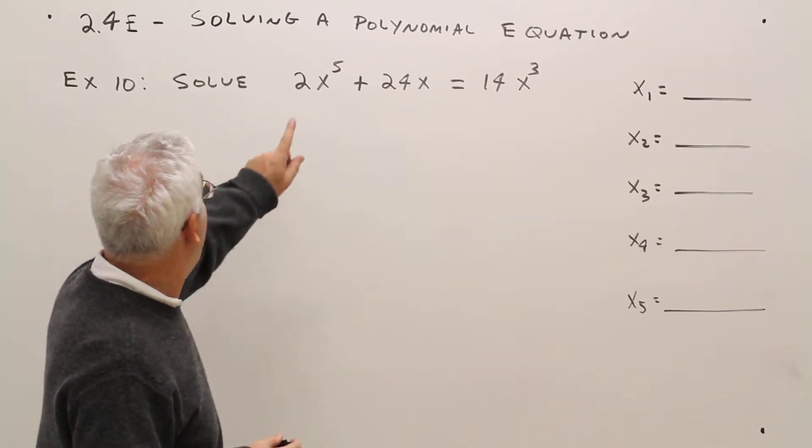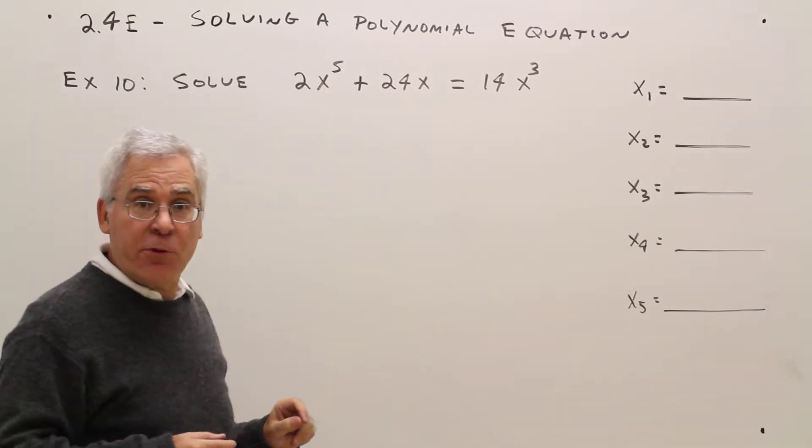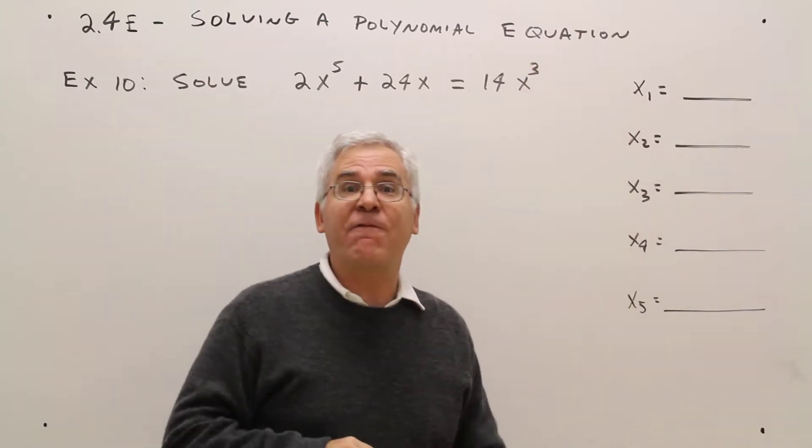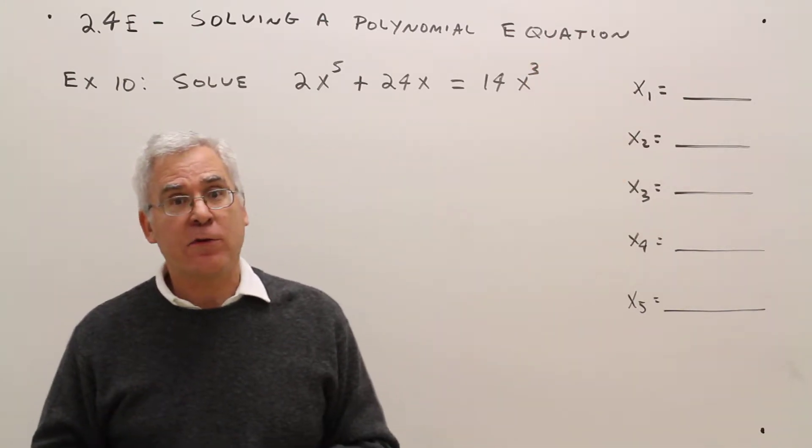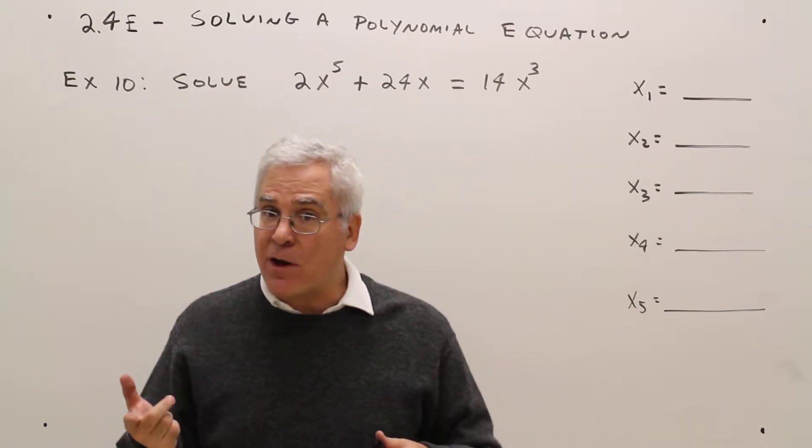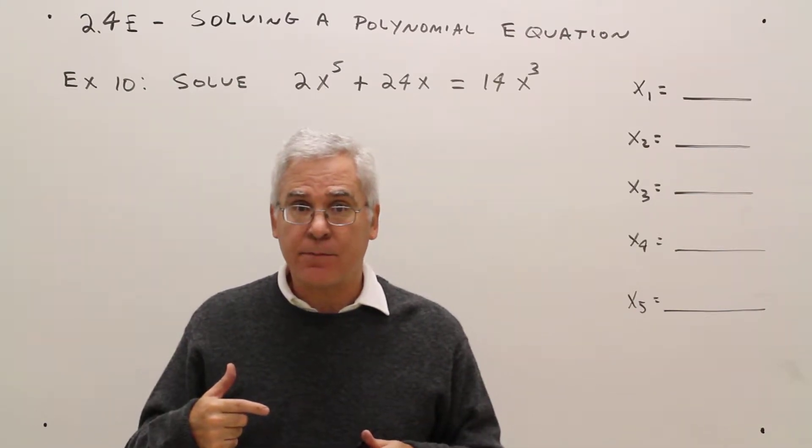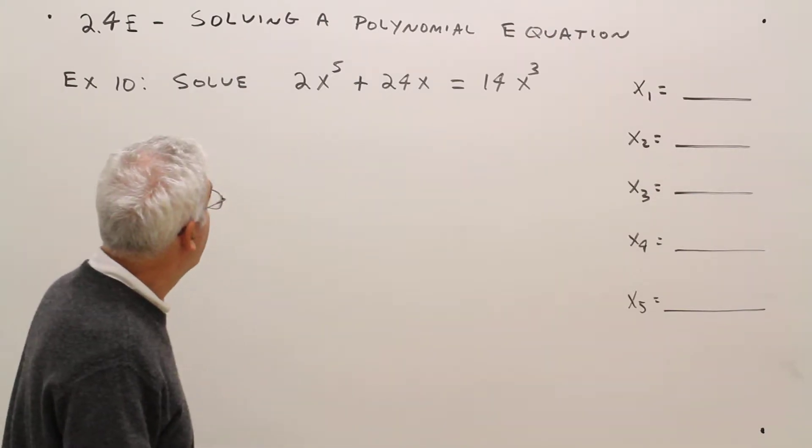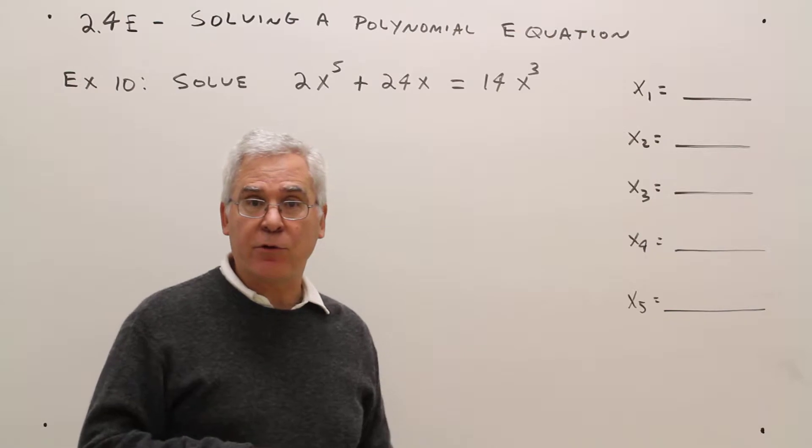Alright, so I've got a fifth degree polynomial. The highest degree term is five, which means there will be five solutions. The solutions may be real or non-real, different or the same. So x sub one through x sub five, and our goal is to find all five of those solutions.